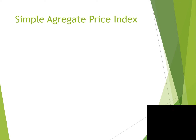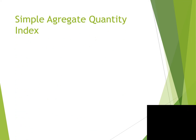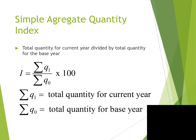Simple Aggregate Price Index: Total price for current year divided by total price for the base year, times 100. Formula: I = (ΣP₁ / ΣP₀) × 100. Simple Aggregate Quantity Index: I = (ΣQ₁ / ΣQ₀) × 100, where ΣQ₁ is total quantity for the current year and ΣQ₀ is total quantity for the base year.